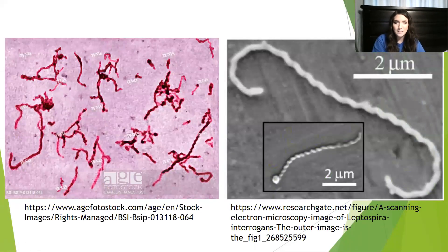Leptospirointerrogens is a spirochete-shaped bacteria. It's flexible and gram-negative. It gets its name from one of its unique features — its question mark shape.